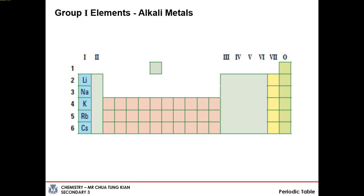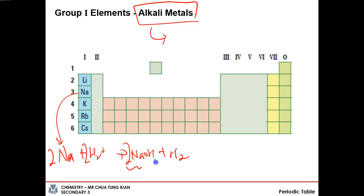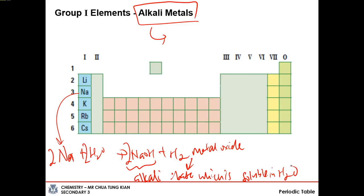Now let's look at specific groups. The first is called the alkali metals. The name tells us that during a chemical reaction, these metals tend to form alkalis. For example: sodium plus water gives NaOH plus H2. Sodium hydroxide is an alkali — it is a base, specifically a metal oxide that is soluble in water. All the alkali metals undergo similar chemical reactions. They tarnish easily in air because they react with oxygen very quickly. As a result, sodium is stored under oil to exclude oxygen and prevent it from reacting.